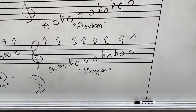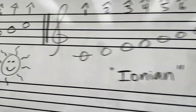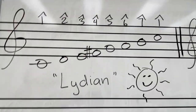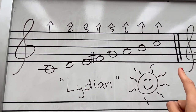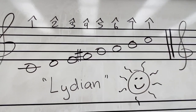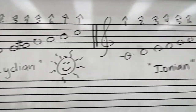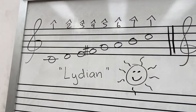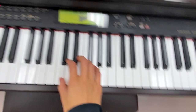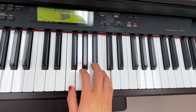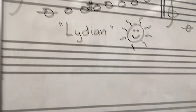Phrygian has a flat two, three, six, and seventh degree of the scale. I've marked each of the modes with the different scale degrees, and I'm doing them all in C major. The reason I'm doing all C major is because C is like a blank canvas — you can see what gets affected for each scale degree.